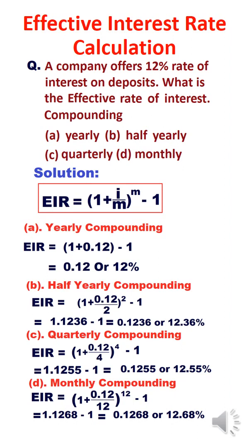If it is quarterly, the frequency is 4. That is 0.12 divided by 4 — 4 is the frequency — and the answer will be 12.55%. If it is monthly, the frequency will be 12, in the sense it will take place 12 times in a year. Therefore, the answer is 12.68%.